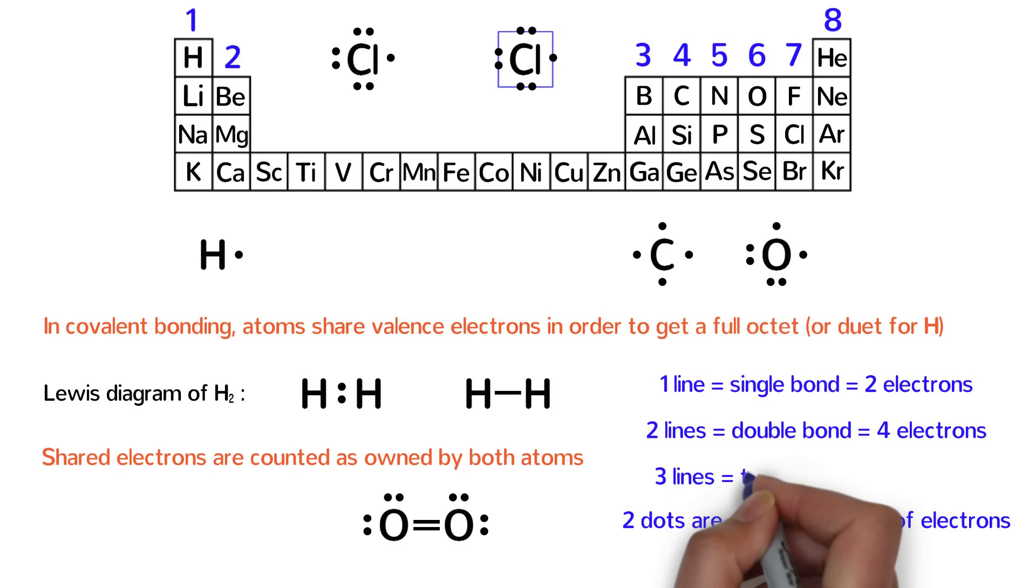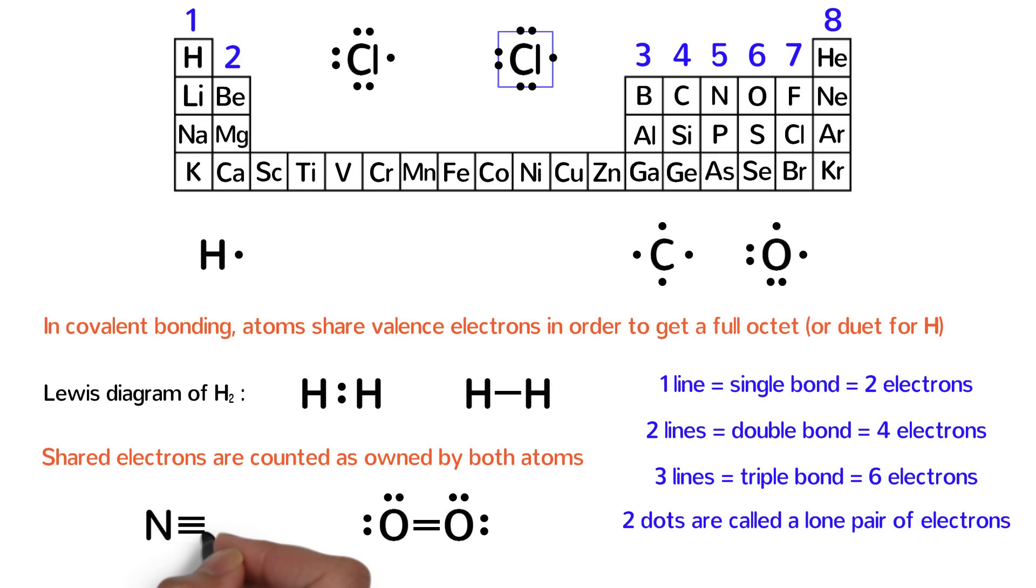Some molecules contain triple bonds, which we write using three lines that represent the sharing of six electrons. An example of a molecule with a triple bond is nitrogen, which looks like this. Once again, notice that both nitrogen atoms have eight valence electrons, six from the triple bond and two from the lone pair of electrons.